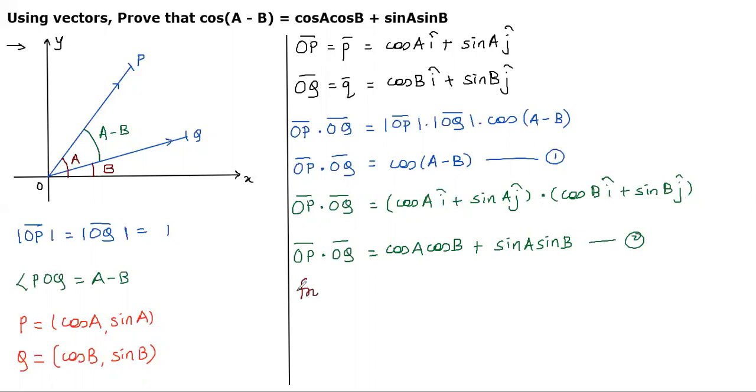Now, from equations 1 and 2, they have the same left hand side. If the left hand side is the same, we can equate the right hand side also. So, cos(A-B), that is the right hand side from equation 1, is equal to cosAcosB + sinAsinB. This is the right hand side from equation 2. This is the required result, and we proved it with the help of dot product. Thank you.